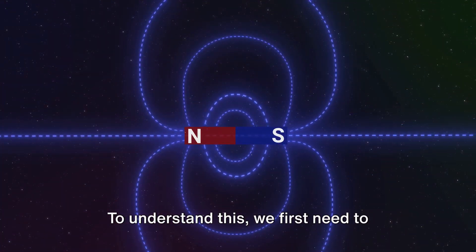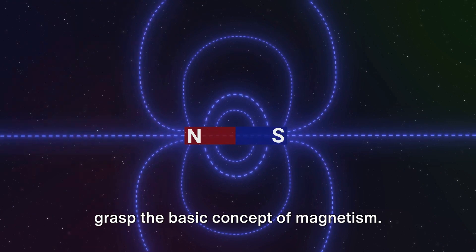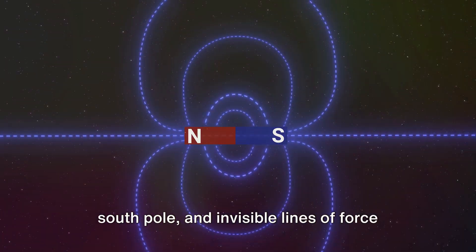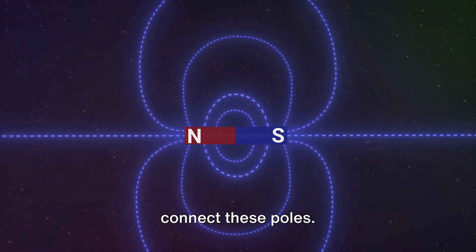To understand this, we first need to grasp the basic concept of magnetism. Picture a bar magnet. It has a north and south pole, and invisible lines of force connect these poles.